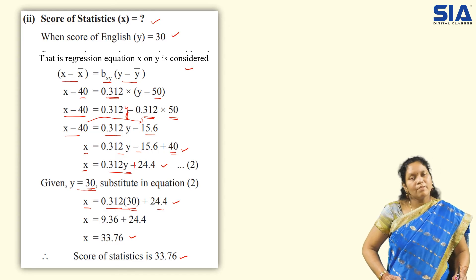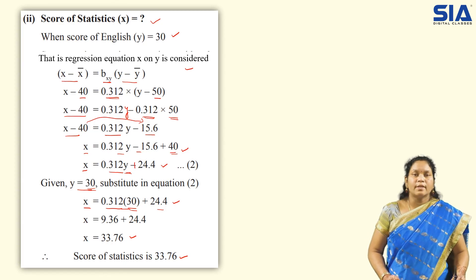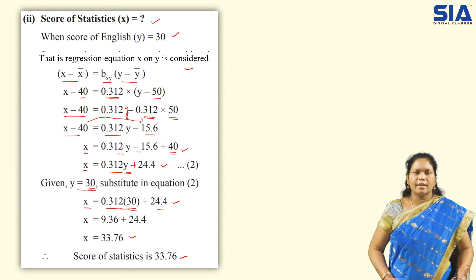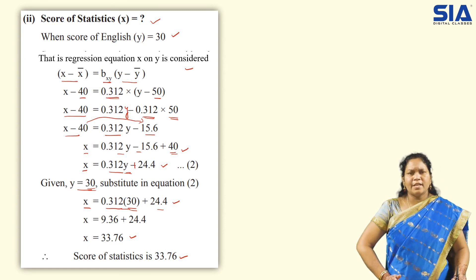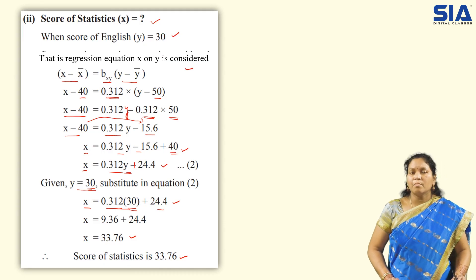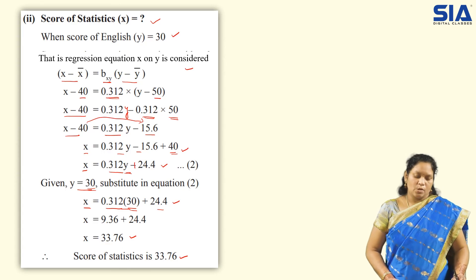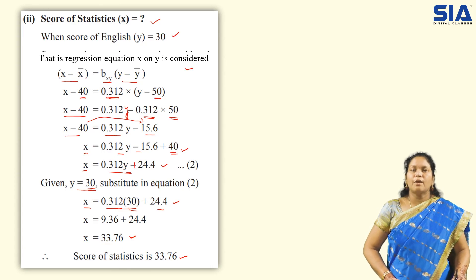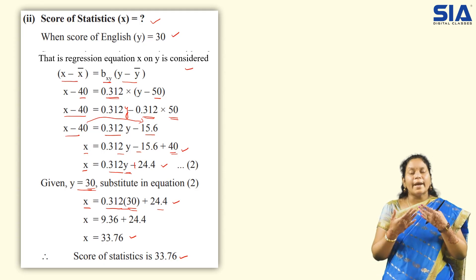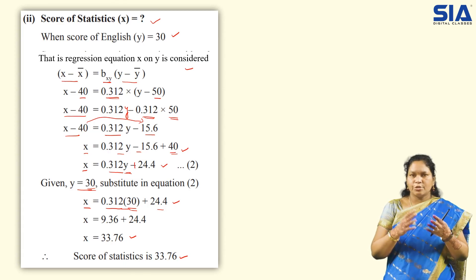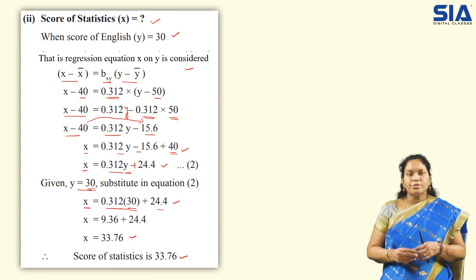Whenever some value is missing, we solve the regression equations, substitute the given value, and obtain the missing value. In an exam, you may get only a single missing value — either x or y. This is how we solve when missing values are involved. Hope you have understood both equations and how to identify which equation to consider. Revise again to be clear. See you all in the next class. Thank you.